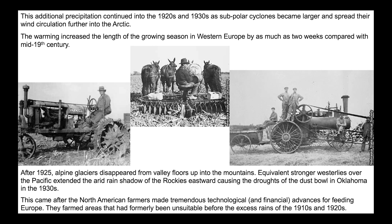This additional precipitation continued into the 1920s and 1930s, with subpolar cyclones becoming larger and spreading their wind circulation further into the Arctic, taking mid-latitude winds higher and increasing the length of the growing season at high latitudes. In Europe, the growing season increased by as much as two weeks compared to the 1800s. In America and Canada, farmers were using great new inventions producing bigger yields — including the disc furrow plow, which grinds and pulverizes the soil. When the soil dried out, it became pulverized dust.